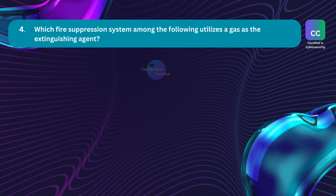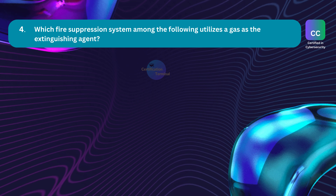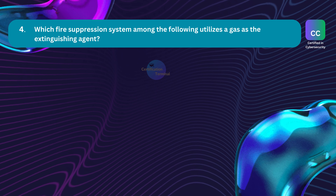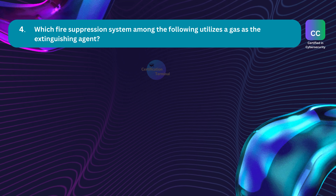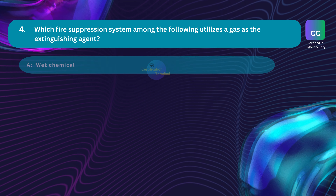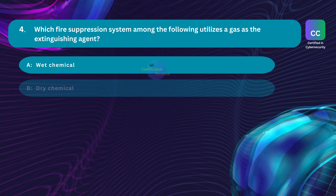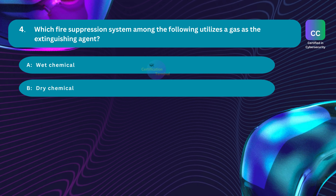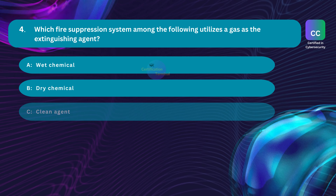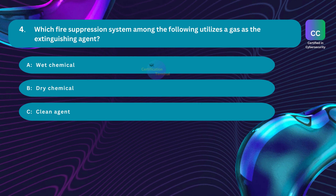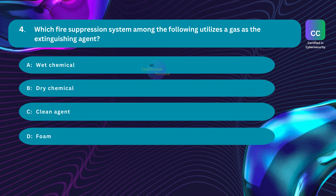Question number 4. Which fire suppression system among the following utilizes a gas as the extinguishing agent? Option A: wet chemical. Option B: dry chemical. Option C: clean agent. Option D: foam.